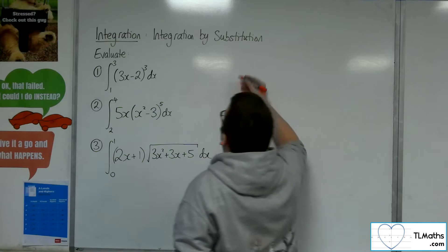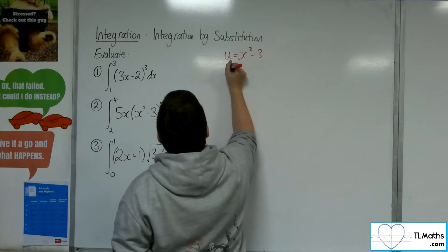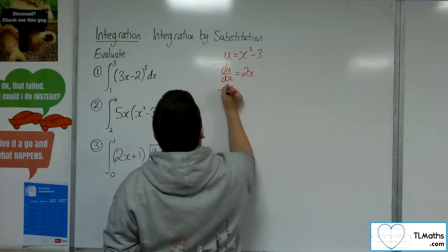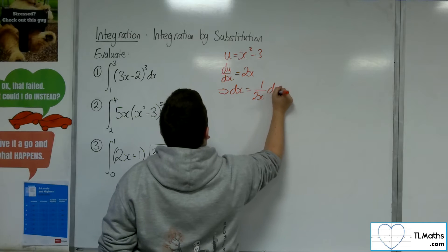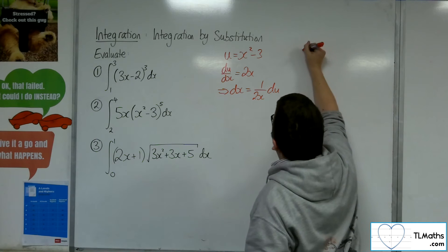The u here will be the x squared minus 3. So du by dx will be 2x. Rearrange to get dx, we'll have 1 over 2x du. Then we want to change the limits.